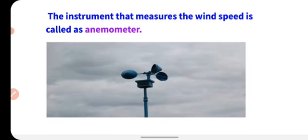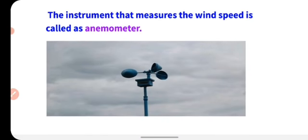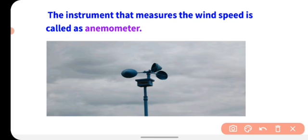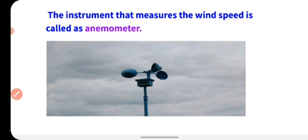The instrument that measures wind speed is called an anemometer. Jis device se hum wind ki speed measure karte hain, use anemometer kehte hain. An anemometer can be of many types. This is a basic type of anemometer. It has four cup-like structures that freely rotate. The rotation of these cups is directly proportional to the speed of the wind — jitni tezi se rotate karenge, utna wind ka speed zyada hoga, aur jitni dheere rotate karenge, speed wind ki kam hai.